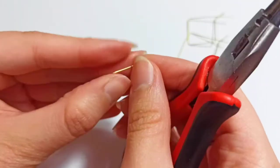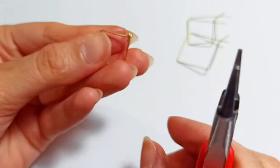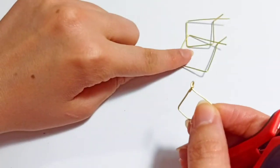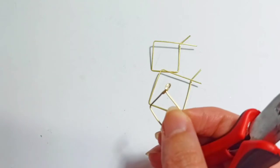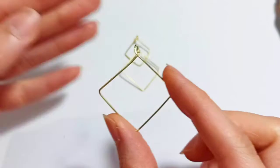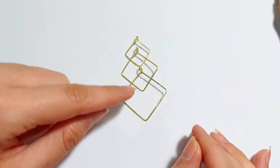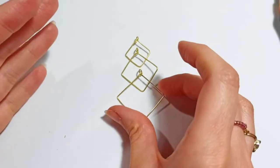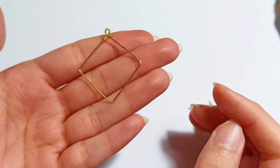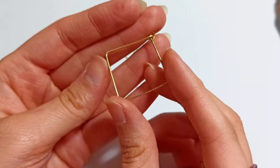We repeat this for the other two squares. When we finish making those loops at the top of every square, this is the time to attach these three shapes. But now we could hammer these squares to have a flattened surface, or just leave it as it is.